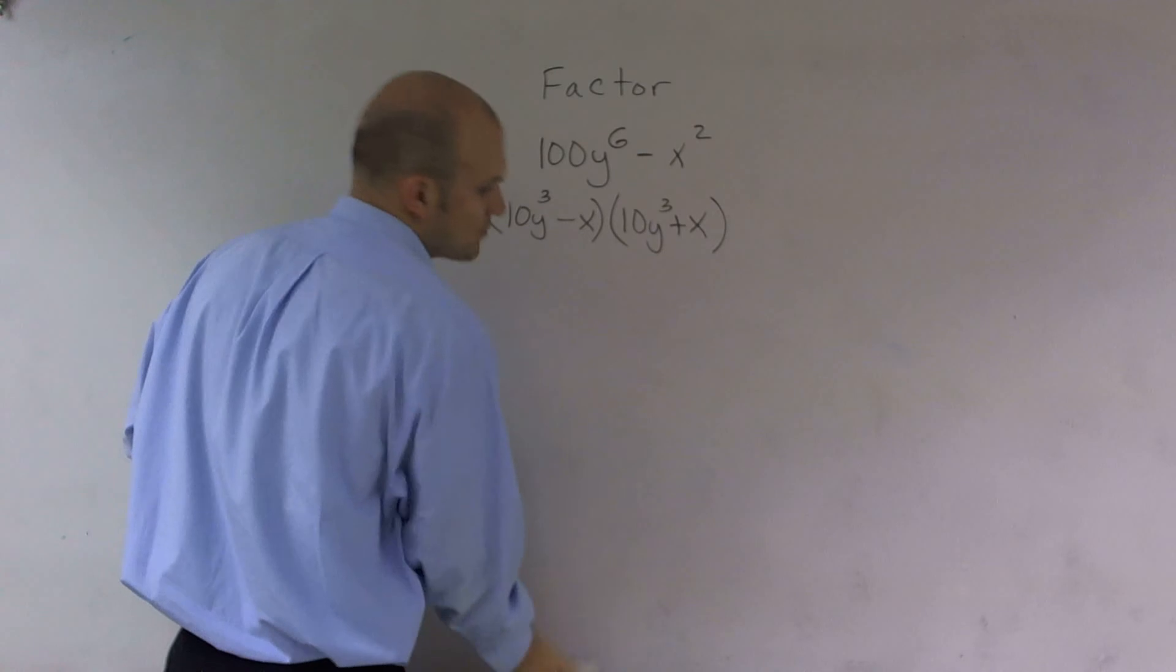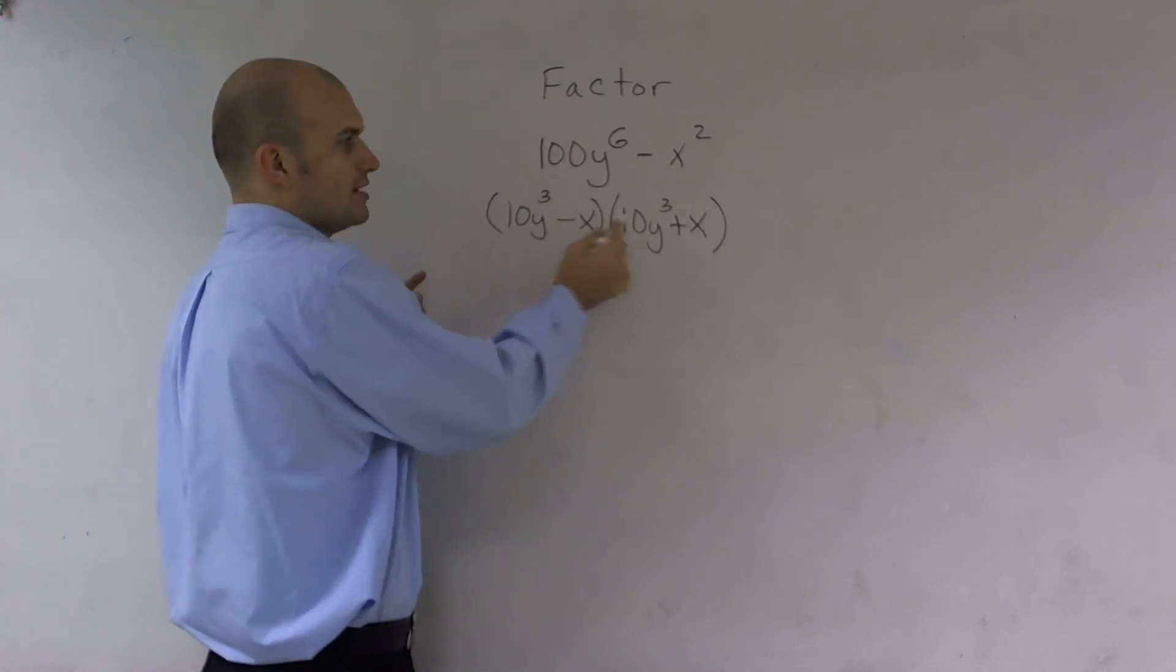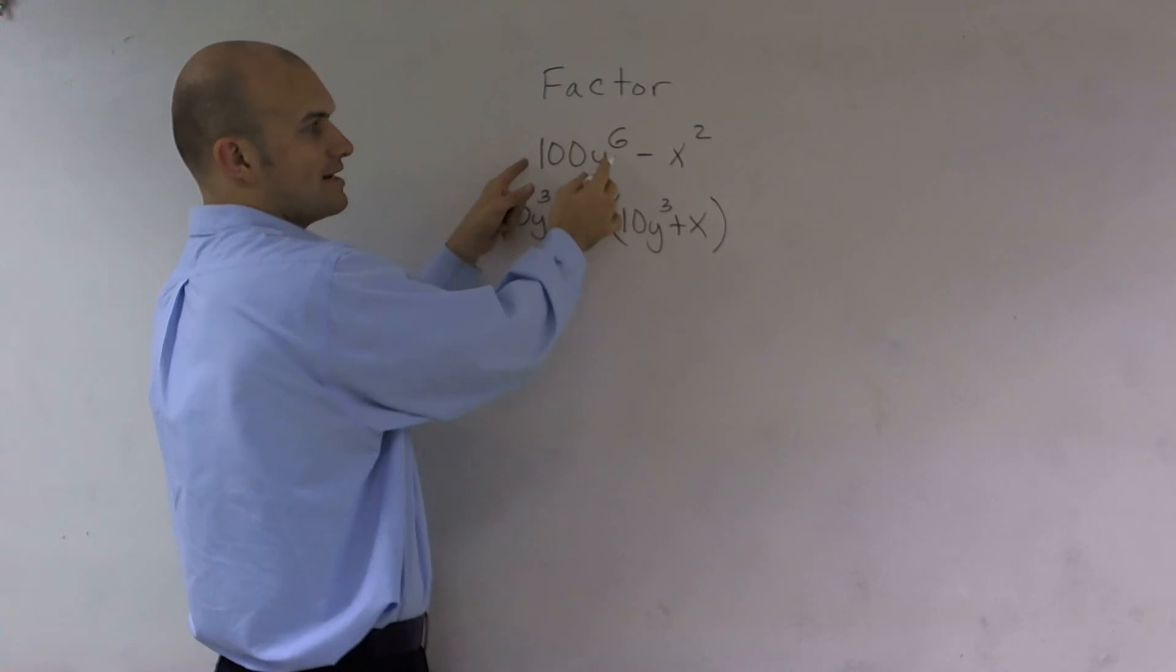is this is what we call a difference of two squares. And the reason why is this is what we essentially call a square. These two numbers, this can actually be rewritten as a square number.